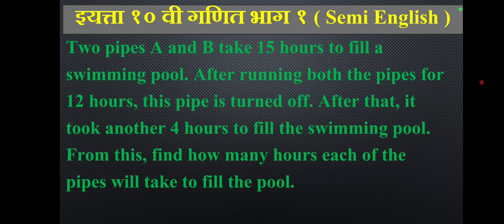Two pipes A and B together take 15 hours to fill a swimming pool. After running both pipes for 12 hours, one pipe is turned off. It then took another 4 hours to fill the swimming pool.